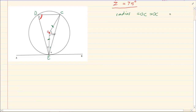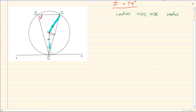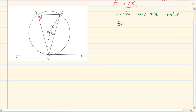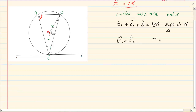Since OC is equal to OE, they are both radii and therefore equal. With two sides equal, what type of triangle do you see? That gives me an isosceles triangle. So if I have an isosceles triangle, then O1 plus C1 plus E1 equals 180 degrees — that is the sum of angles of a triangle.